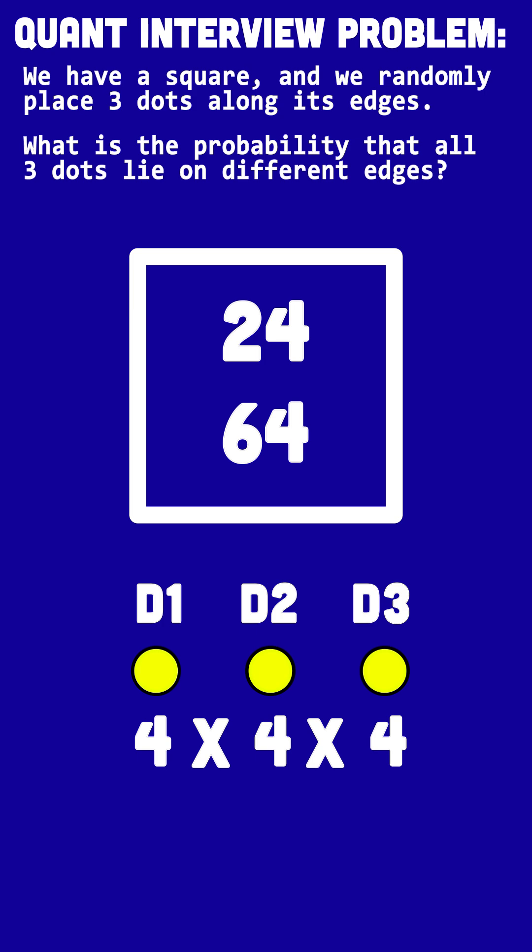So my final answer is 24 ways to arrange three dots along different edges out of 64. And bam, we've solved it.